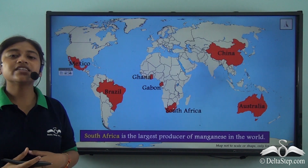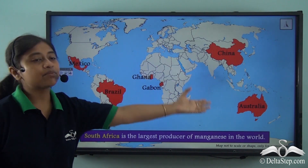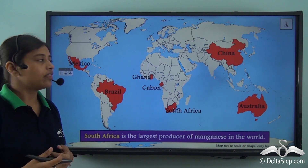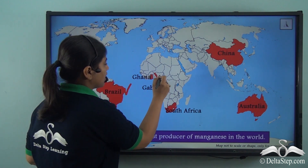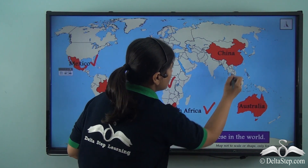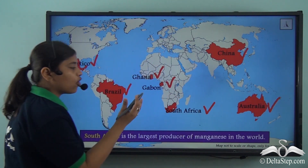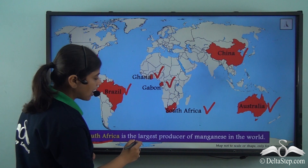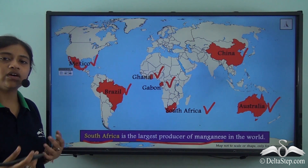Looking at the world map, these are the leading producers of manganese in the world. These countries are Mexico, Brazil, Ghana, Gabon, South Africa, China and Australia. Out of all of these, South Africa is the largest producer of manganese in the world.